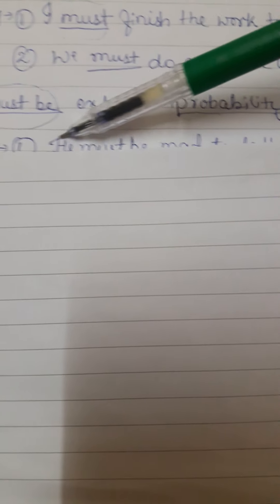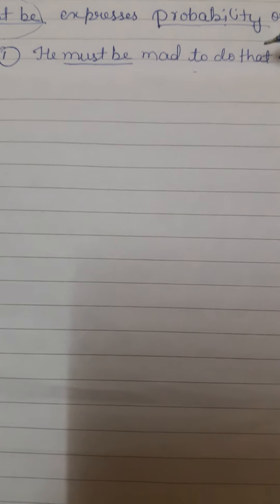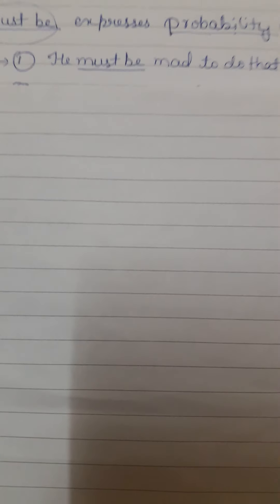Moving to the next usage of 'must': 'must be.' This expresses probability or likelihood. At many places you can come across the structure 'must be' — must plus be. You should interpret it as: there is a probability or a sense of likelihood. The first example is: 'He must be mad to do that.' Suppose I am saying this about my friend — I am indicating that he is almost like a mad person.